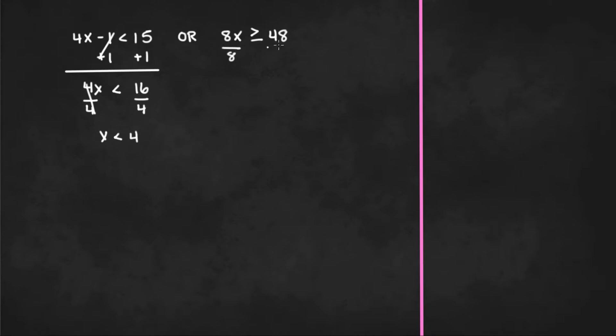On the second inequality we just have to divide both sides by 8 and we're left with x is greater than or equal to 48 divided by 8 or 6.